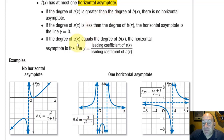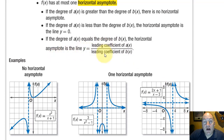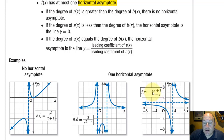The final case is if the degree of the numerator is equal to the degree of the denominator — a special situation where the horizontal asymptote becomes the ratio of the leading coefficients. For example, 2x plus 1 over x minus 3: the degree of both numerator and denominator is 1, so f(x) approaches 2 divided by 1, or 2. We have a horizontal asymptote along the line f(x) equals 2.